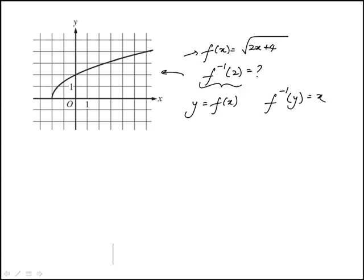So here when they ask us f inverse of 2, we're looking at the original function, the value of x that would give me a y of 2. What value of x would result in a value of 2? And if you read this graph here, a y value of 2 would result when x is 0, so f inverse of 2 is 0.